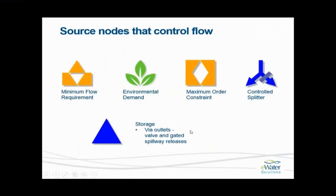Some nodes in Source control flow as opposed to actually using flow. Water users will take flow out of the system, whereas these nodes will control the amount of flow which can be released. We have minimum flow, environmental demand, maximum order constraint, controlled splitter, and storage outlets — all of which control the amount of flow released.